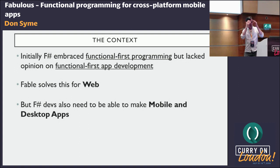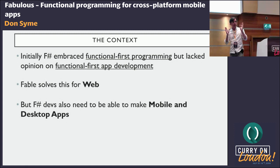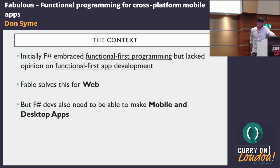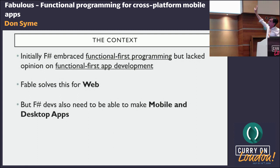We had a great methodology on functional-first programming applied to computational components. But probably the biggest mistake I made with F-Sharp — the thing I didn't realise — was how relevant functional programming is to UI programming. If I could wind back time, I think that would be where I'd focus a lot of previous energy. Elm showed the way for applying functional programming to the web. Fable, in the context of F-Sharp, takes the Elm programming model and applies it to web programming using React underneath. But F-Sharp devs also need to be able to do mobile and desktop app programming — and that's what we're looking at here.